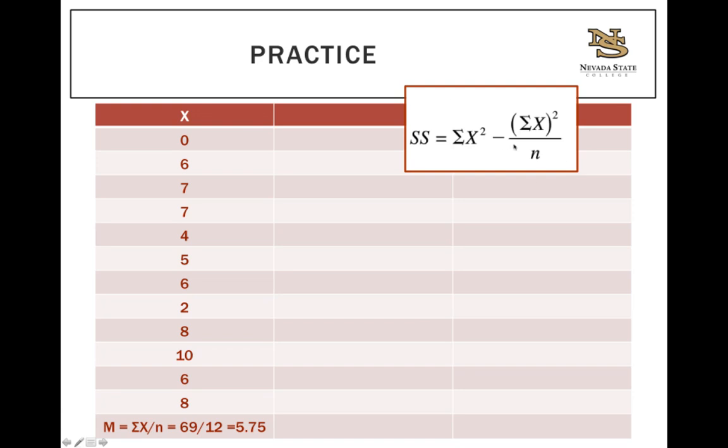But in this case, we're dealing with slightly different numbers. We already have the sum of x here - that's 69. We'll just square that to get this number here. And we have n, that's just 12. What we don't have is the sum of x squared. So that's what we're going to figure out for this problem.